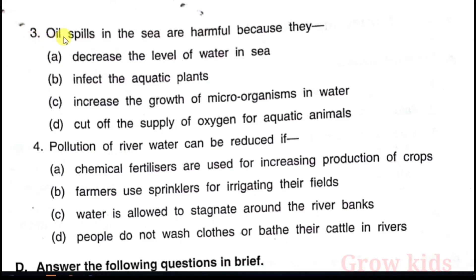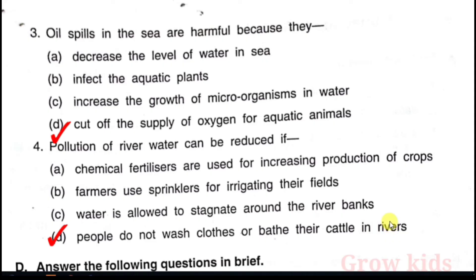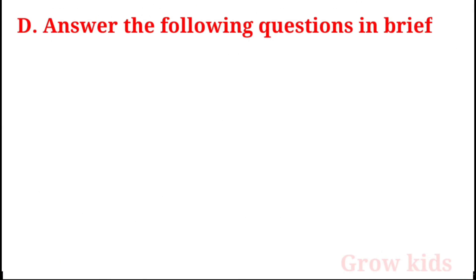Question 3: Oil spills in the sea are harmful because they cut off the supply of oxygen for aquatic animals. Question 4: Pollution of water can be reduced if people do not wash clothes or bathe their cattle in rivers.